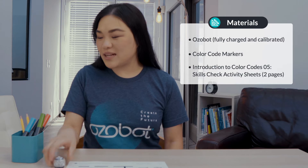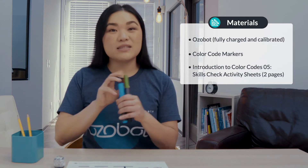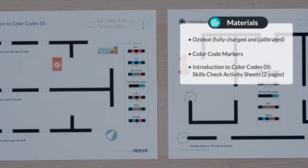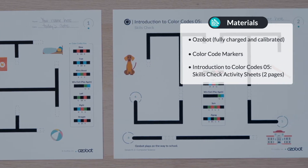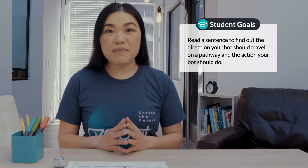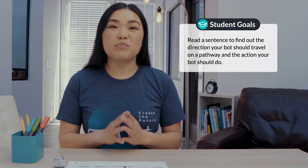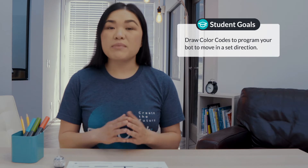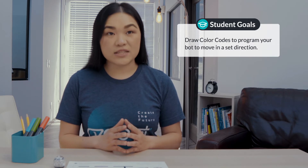For today's lesson, you will need an Ozovot, fully charged and calibrated, color code markers, and both pages of your Introduction to Color Codes Lesson 5 Skills Check Activity Sheets. In today's lesson, you will read a sentence to find out the direction your bot should travel on a pathway and the action your bot should do, draw color codes to program your bot to move in a set direction, and draw color codes to program your bot to move at a set speed or do a special move.